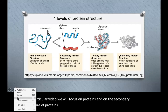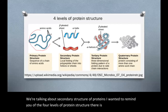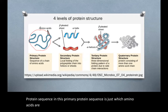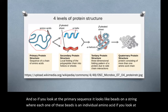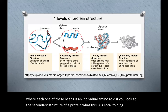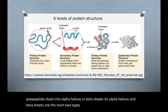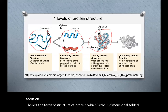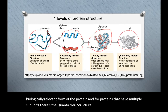Before talking about secondary structure of proteins, I wanted to remind you of the four levels of protein structure. There is the primary protein sequence, which is just which amino acids are covalently bonded to which amino acids — it looks like beads on a string, where each bead is an individual amino acid. The secondary structure is the local folding of the polypeptide chain into alpha helices and beta sheets. There's the tertiary structure, which is the three-dimensional folded biologically relevant form of the protein. And for proteins that have multiple subunits, there's the quaternary structure, which describes how those multiple subunits come together.